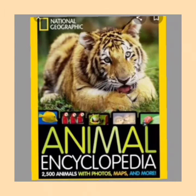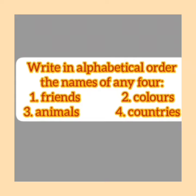So the question is: write in alphabetical order the names of any four — the words are friends, colors, animals, and countries. We have to write it in alphabetical order. First we see that A — animals. The word animals starts with the letter A, and we know that letter A comes first in the alphabet. So we will write animals first.